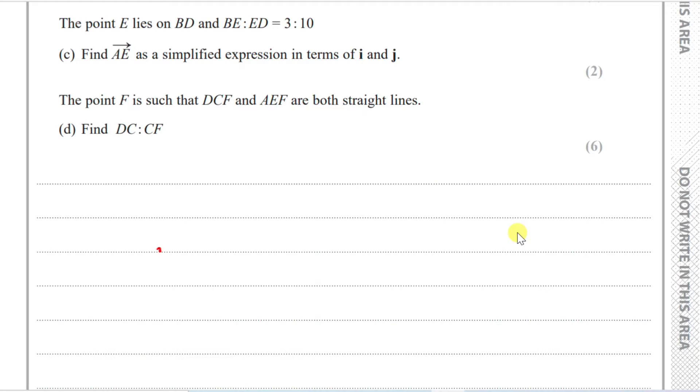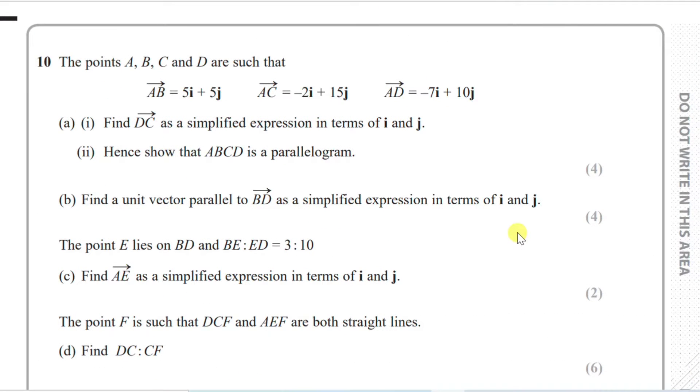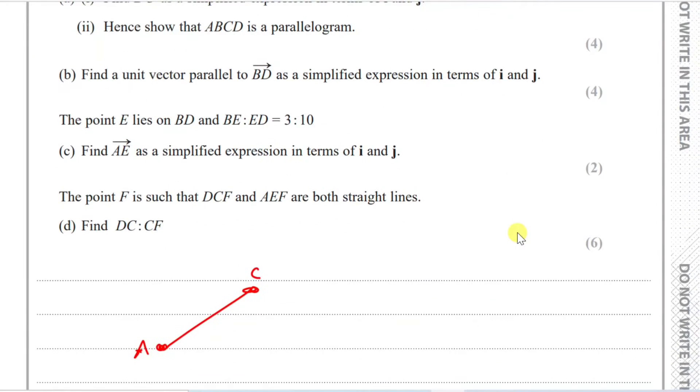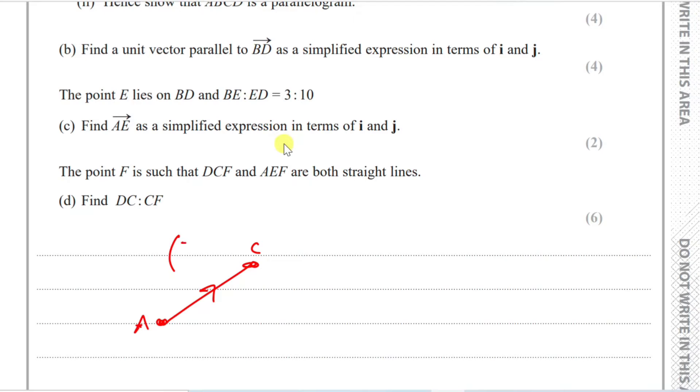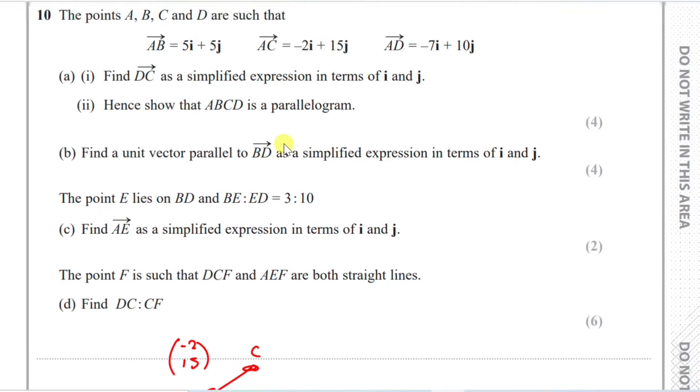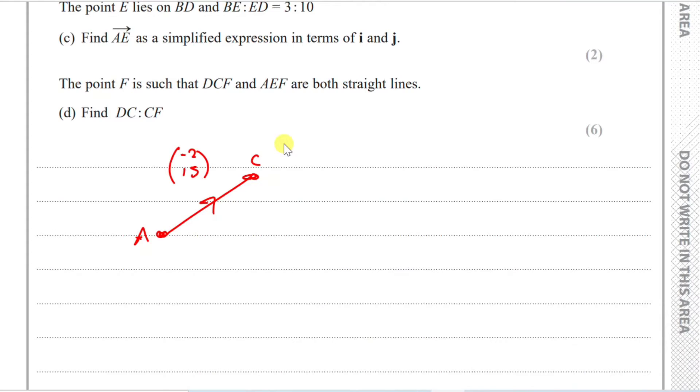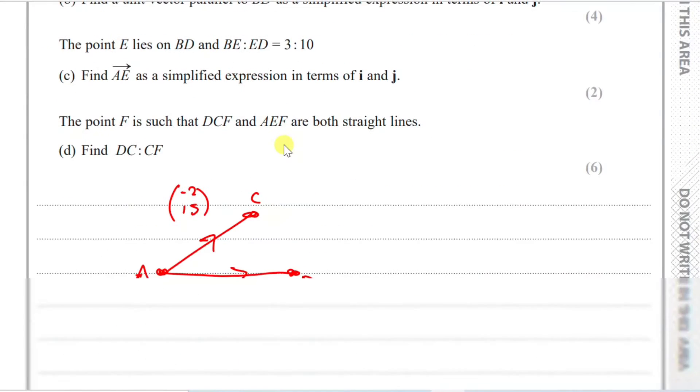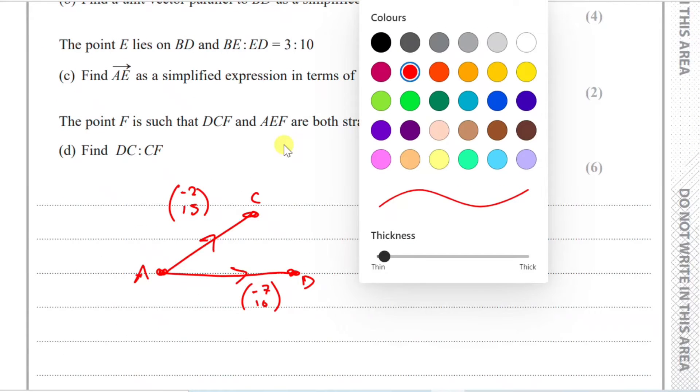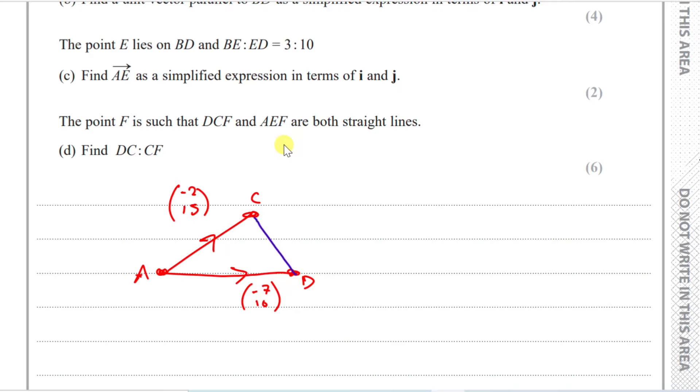So it's telling us from point A to point C, we travel the vector length of minus 2 plus 15. What I usually like to write, I like to write as a column. I put the i term on top and the j term below, so it would be minus 2 and 15, whereas if we went from A to D, so let's say D was here instead.